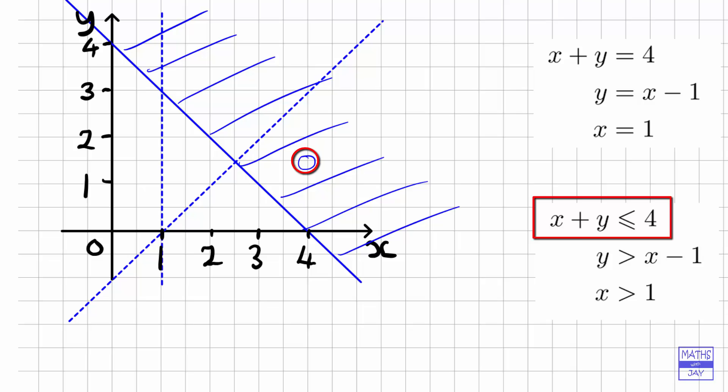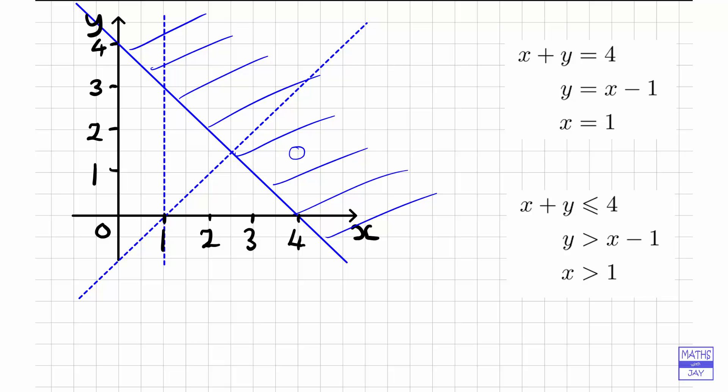Then let's have a look at y is greater than x minus 1. Now we want to shade the area where y is less than x minus 1, so we want to shade the area underneath that line, so that's down here. We're shading out all of that, that's the bit we don't want. Again, we can check that we've shaded out the right area.